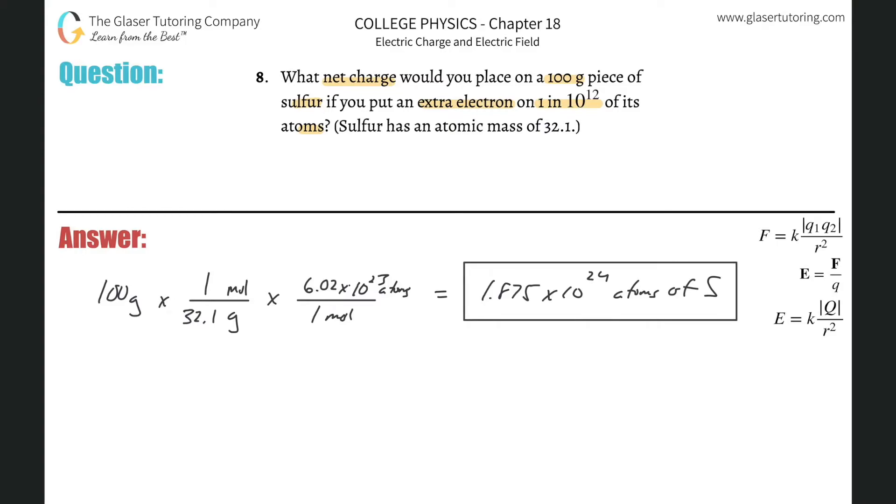Then it tells us that we're going to place an extra electron on one atom out of every 10 to the 12th of them. So basically what we can do now is we can take this number and then divide it by 10 to the 12th. And that would tell us then the number of extra electrons.